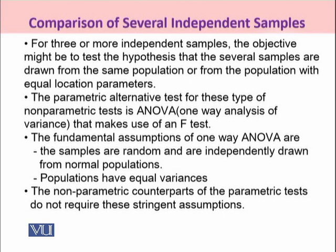If we are talking about means, we make use of ANOVA to test the equality of several means. But if some of the stringent assumptions of ANOVA are not met — such as that the samples must be random, that all samples are independently drawn from normal populations, and that the populations have equal variances — we cannot apply ANOVA. Equal variances may be tested using Levene's test, and under ANOVA, the F-test is used to test the equality of population variances.